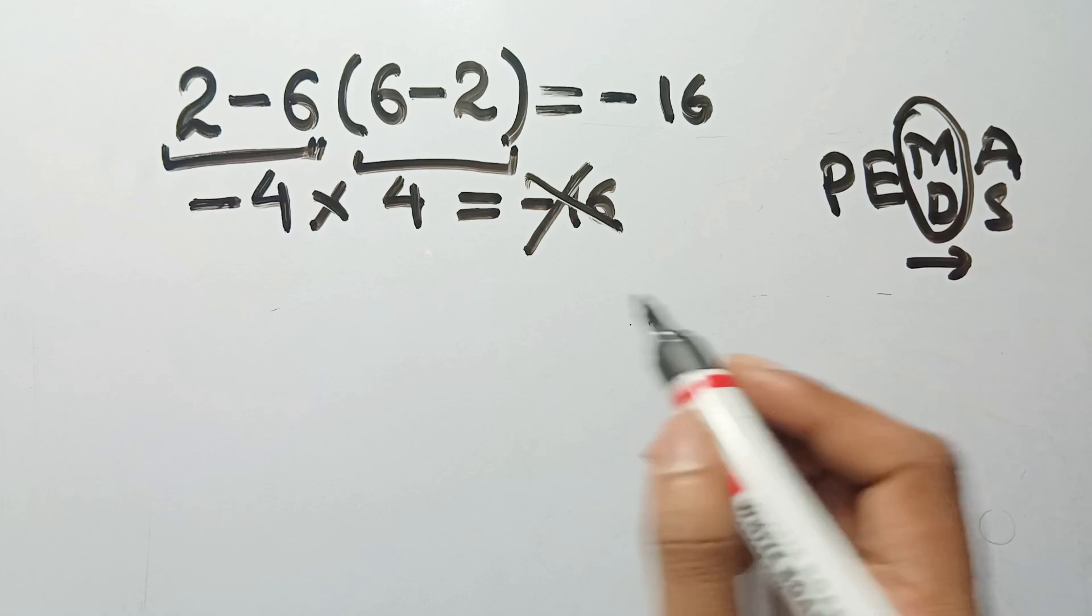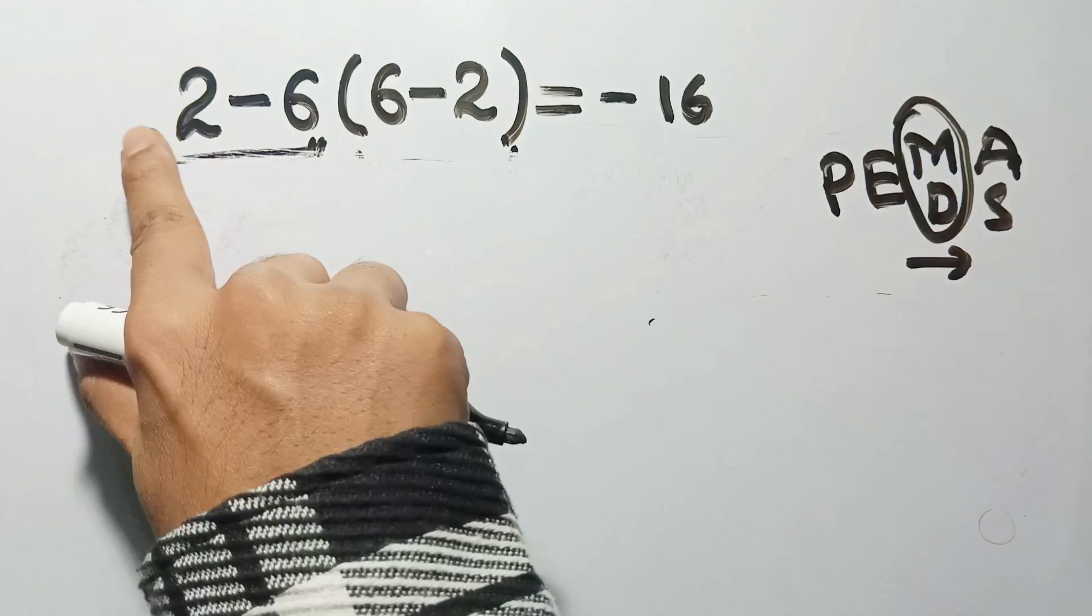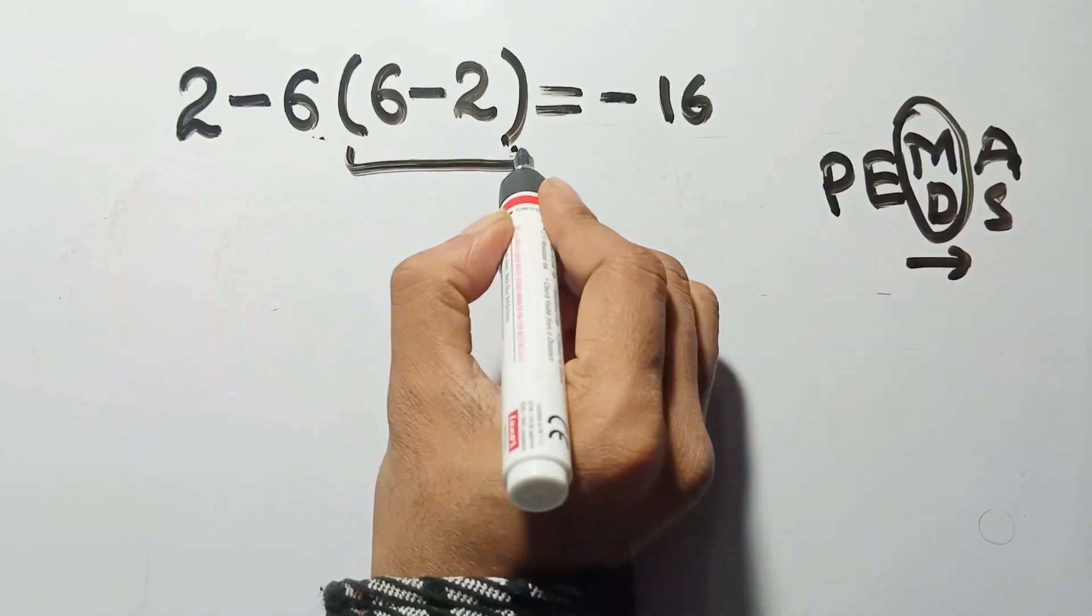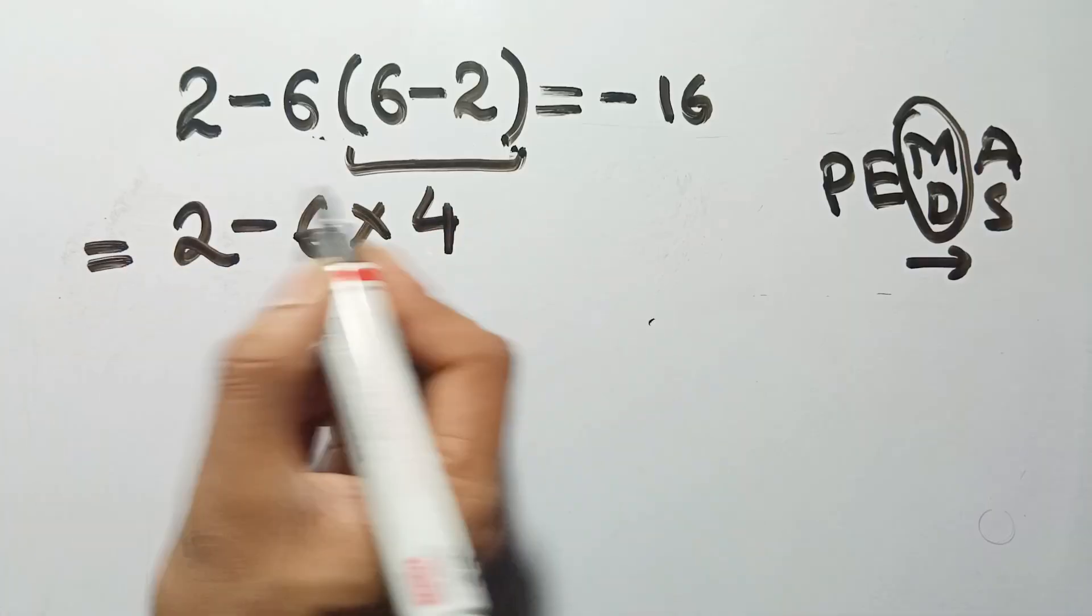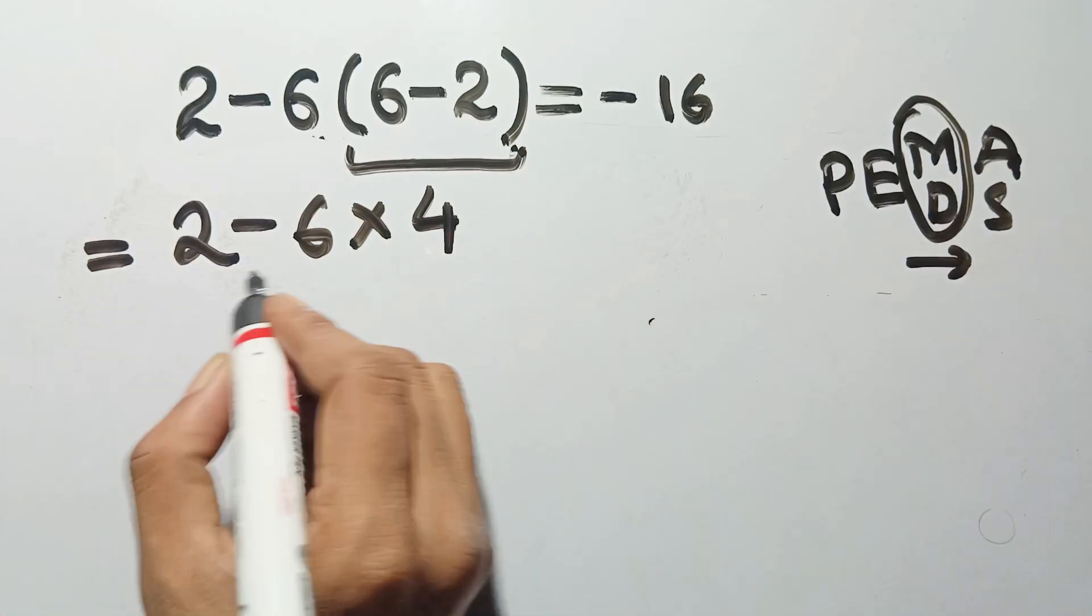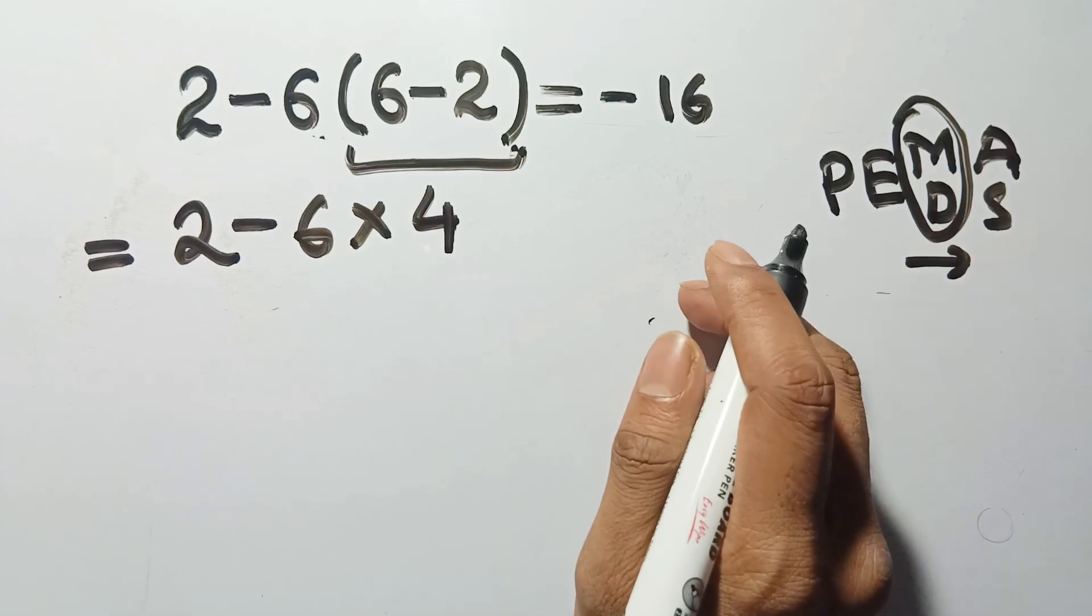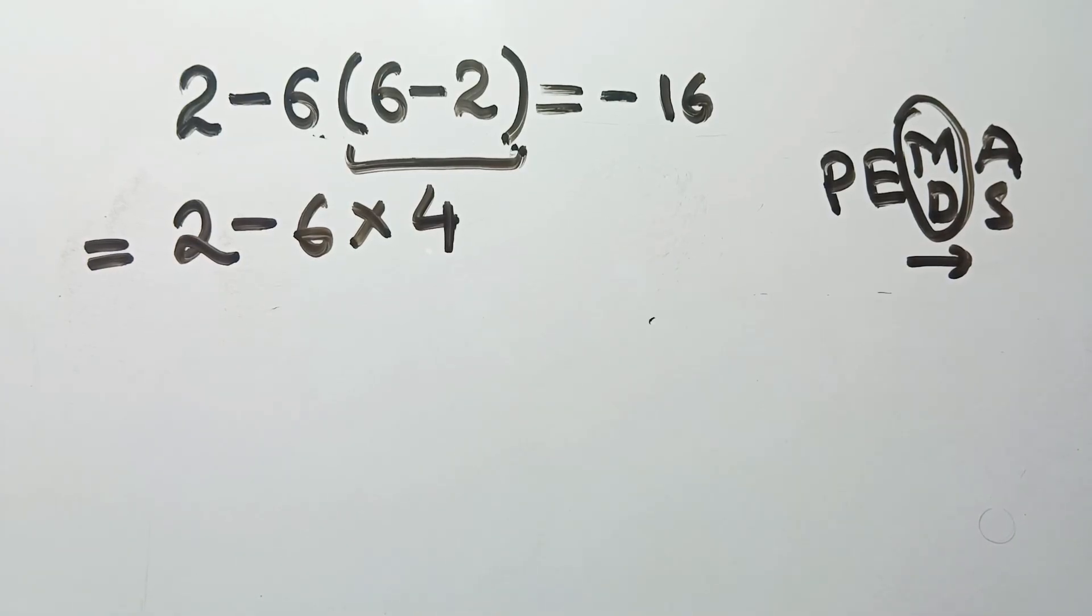So in this problem, the parentheses come first. Let's solve that. 6 minus 2 equals 4. Now the expression is 2 minus 6 times 4. Here's the mistake people make. They do 2 minus 6 first, treating it like left to right subtraction before multiplication. That's wrong.